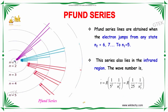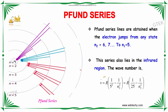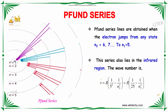For the Pfund series, the electron jumps from an outer orbit to the fifth orbit. This series also lies in the infrared region, and the wave number is ν̃ = R(1/25 − 1/n2²).